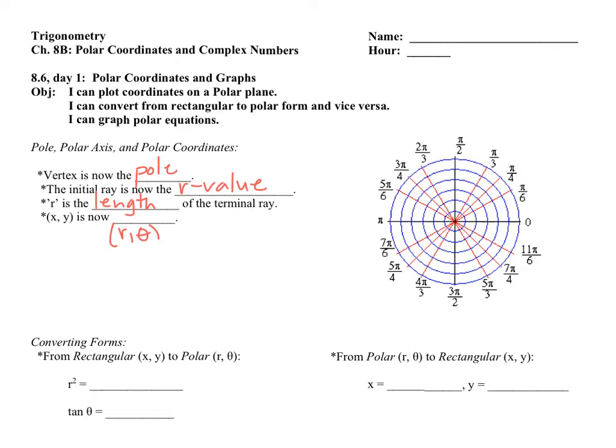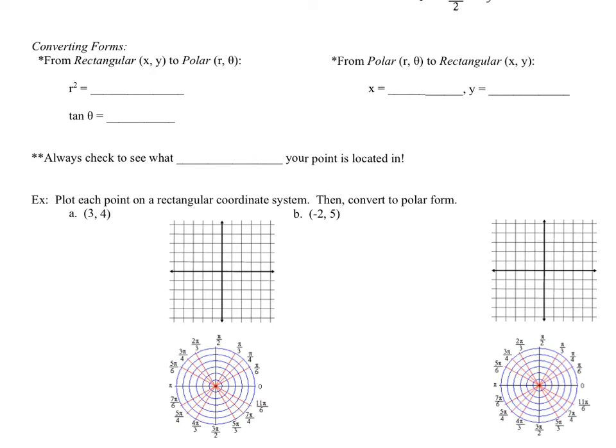Here's what we do to convert forms. If you have a coordinate in rectangular form and you're converting to polar form, there are two things you do to determine your r value and your theta value. The definition for r squared is x squared plus y squared. To get r by itself, then you'd have to take the square root.